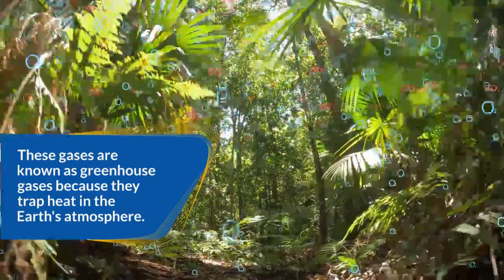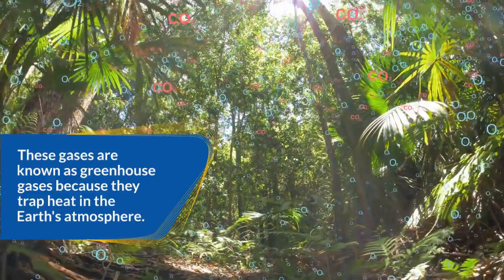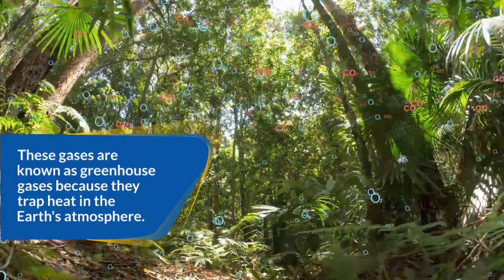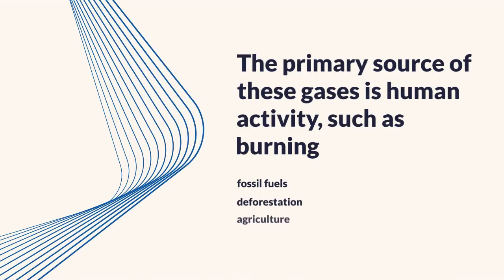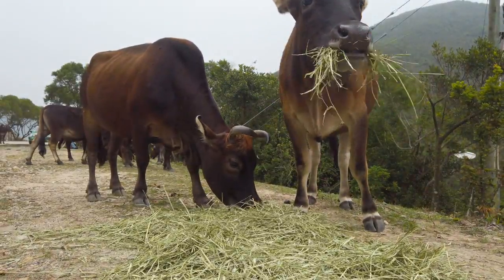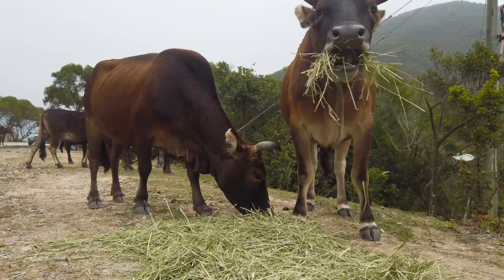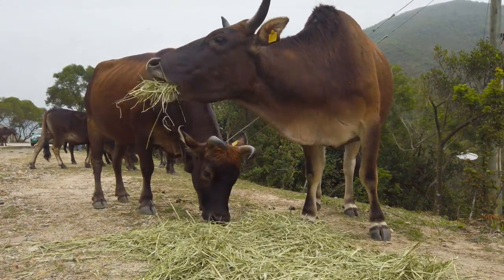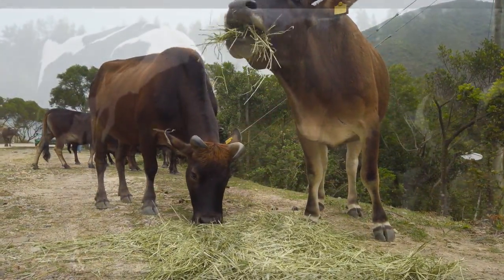The primary source of these gases is human activity — such as the burning of fossil fuels, the cutting down of trees which is deforestation, and also through agriculture, where cattle are actually blamed for some of the methane that is responsible for the greenhouse effect.